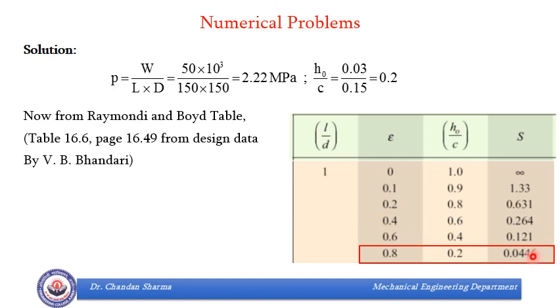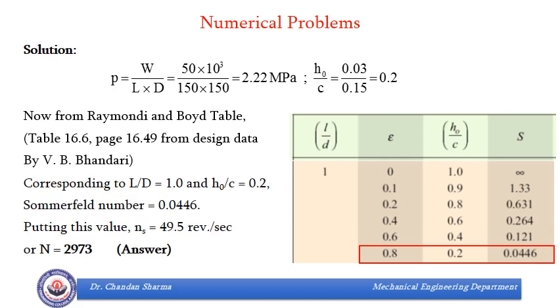So from here, we will take value of S as 0.0446. And for this value of S, we can put in the formula for Sommerfeld number and the only unknown was NS. So we can easily find speed of journal in revolutions per second. That came out to be 49.5 revolutions per second. And we can convert that into RPM. So N is 2973 RPM is the required answer. So you can see that the process is very straightforward, there is nothing difficult in it. We can easily find the required parameters.